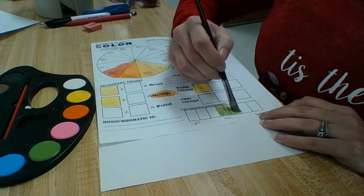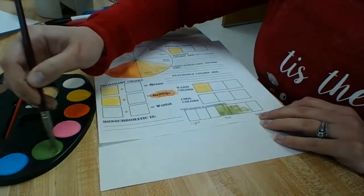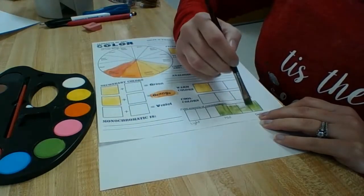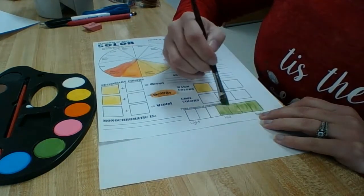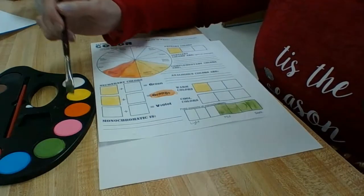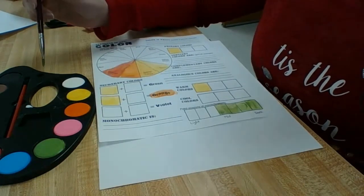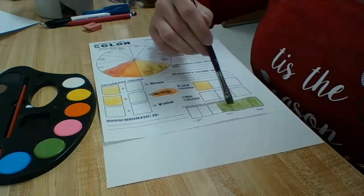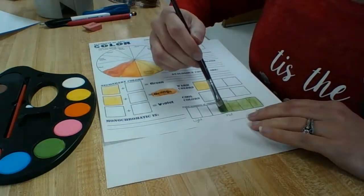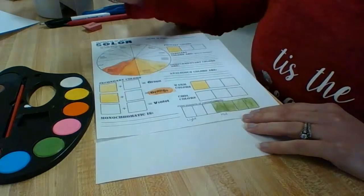And actually what you could do, especially for your dark areas, is put that green all the way across. And this really only works for this kind of paints here. If we're doing liquid paint, you wouldn't be able to go all the way across like this. You'd have to mix it before you put it on your paper. So I could go all the way across there.